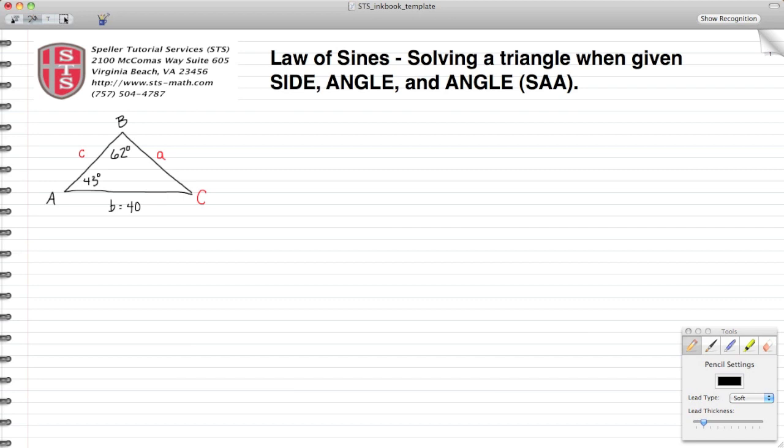Side C and we're going to solve this triangle when given only a side, an angle, and an angle. In this case, we have a side of 40 for B, angle A 43 degrees, angle B 62 degrees.